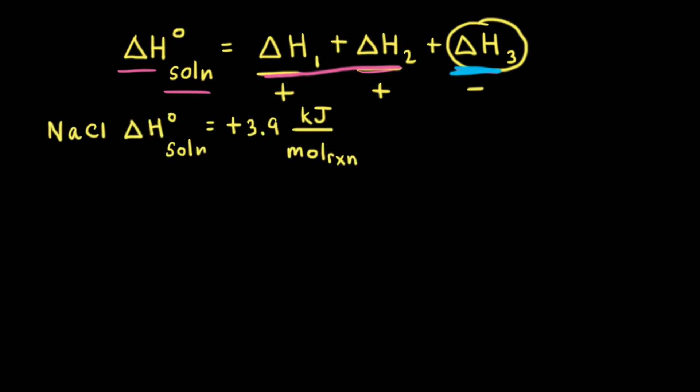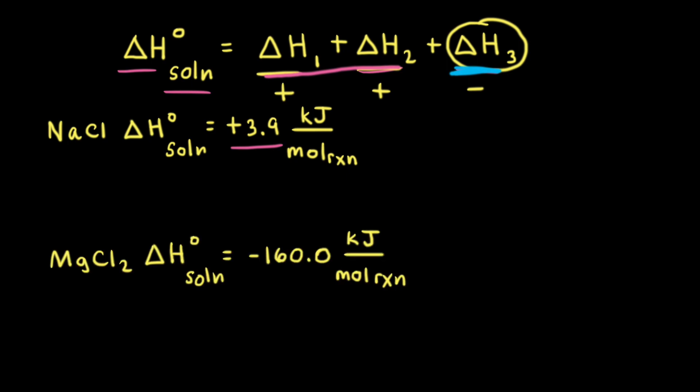An example of a substance that has a positive value for delta H-naught of solution is sodium chloride. At 25 degrees Celsius, delta H-naught of solution for sodium chloride is positive 3.9 kilojoules per mole of reaction. An example of a substance that has a negative value for delta H-naught of solution is magnesium chloride. At 25 degrees Celsius, delta H-naught of solution for magnesium chloride is equal to negative 160.0 kilojoules per mole of reaction.